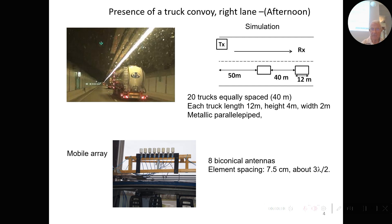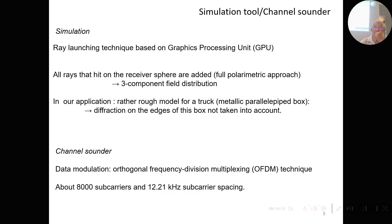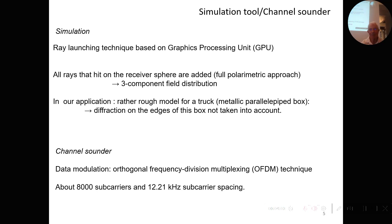For the simulation we use a ray-launching technique using a graphics processing unit. The idea is that all rays hitting a receiver sphere around the real receiver are summed in amplitude and phase, and we can also determine the three-component field distribution. Our model of a truck is a metallic box; diffraction on the edges of this box has not been taken into account since this does not reflect real conditions — in this simulation the truck acts only as an obstacle.